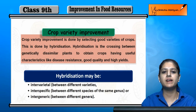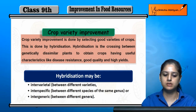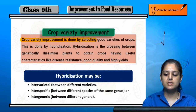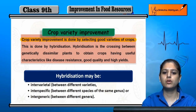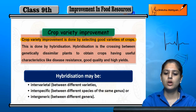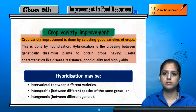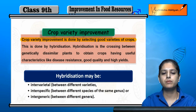We will start with crop variety improvement. Crop variety improvement is done by selecting good varieties of crop. If we choose a good variety, the crop is further improved by hybridization.